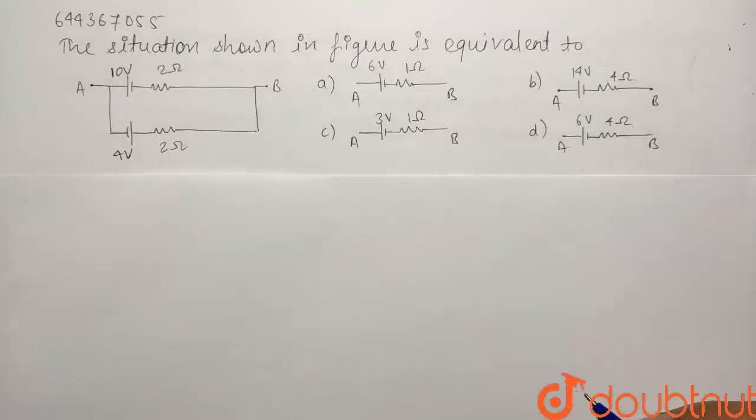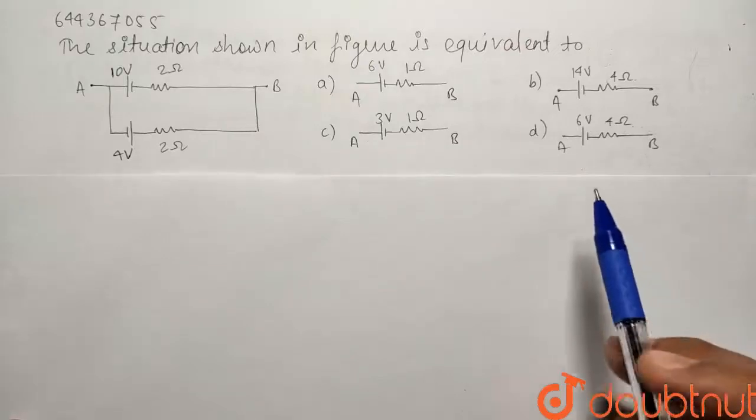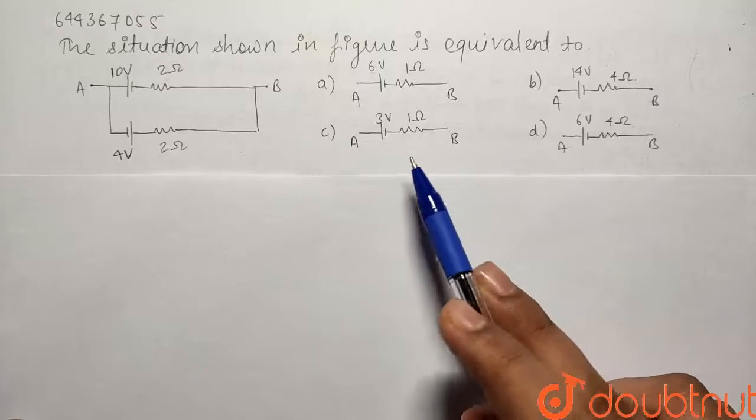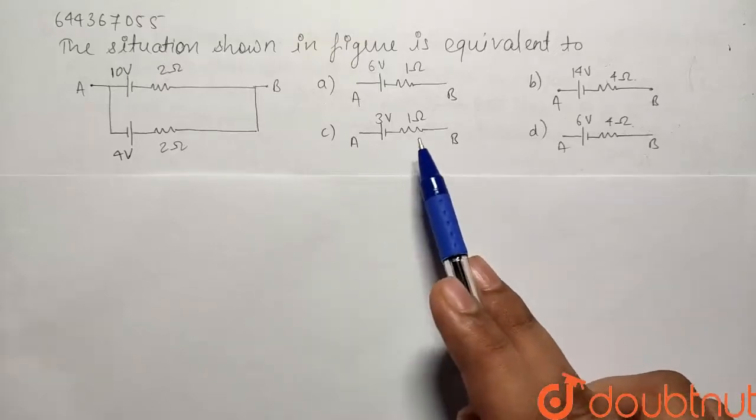So here we have a question from the chapter current electricity. The situation shown in the figure is equivalent to. So we have been given a circuit and we have to convert it into a single element circuit of one element of potential and one element of resistance.